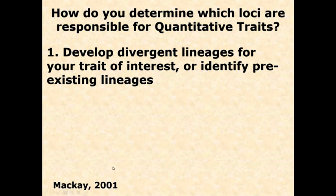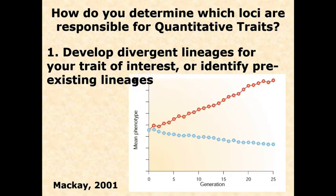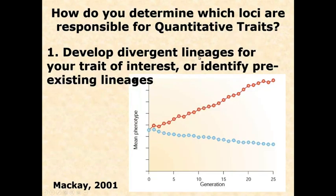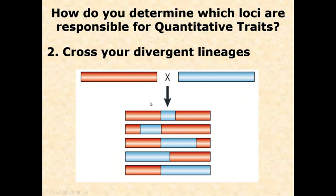Then you cross the divergent lineages. When you cross them, you get mixing and matching due to random assortment and crossing over during meiosis. Instead of crossing divergent lineages today, we can obtain and analyze a large database. Big data can take the place of these crossing experiments and provide a much more powerful tool — for example, in humans.